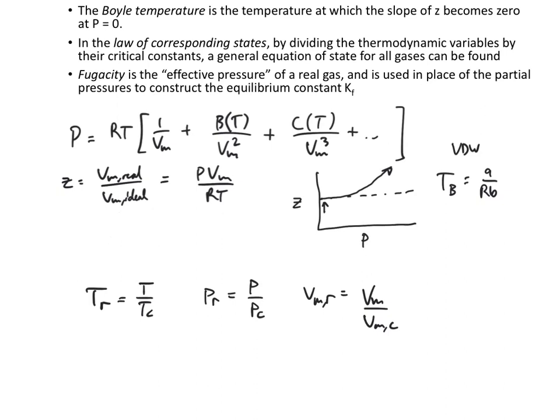Lastly, in this video we saw fugacity, which is necessary for constructing an equilibrium constant that actually relates to the Gibbs free energy of reaction. If we want to find partial pressures or mole fractions based on the Gibbs free energy, we have to go through the fugacity — we can't just go straight to pressure. That was the fugacity and the fugacity coefficient.